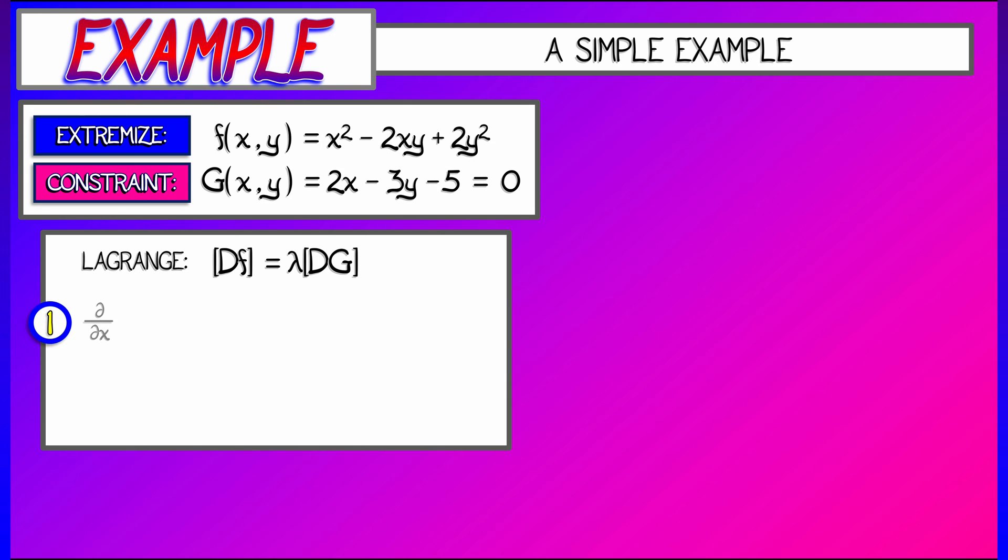This is a system of equations. The first is the partials with respect to x. I take the partial of f with respect to x, and I get 2x minus 2y. That has to equal lambda times the partial of g with respect to x. That is 2 times lambda. That's our first equation. Our second equation is the partials in y. I take the partial with respect to y, I get minus 2x plus 4y for df, and on the right-hand side I get lambda times negative 3.